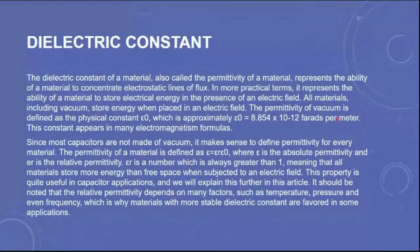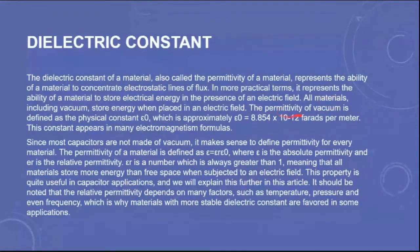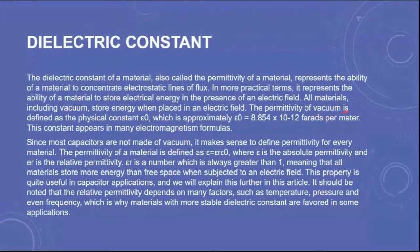The permittivity of vacuum is the physical constant epsilon zero, which is approximately 8.854 multiplied by 10 to the power minus 12 farads per meter. This constant appears in widely used electromagnetism formulas. The electromagnetic field is also responsible for representing this capacitance quality, because of which we get the permittivity concept. This represents how much amount of electrical energy we can store in that material.